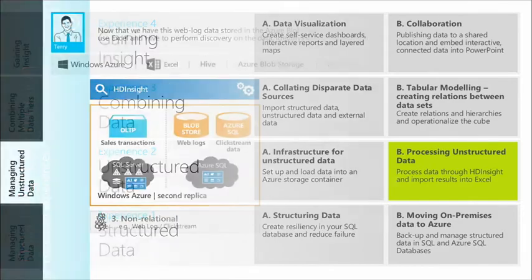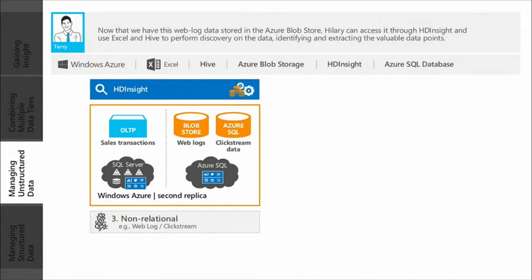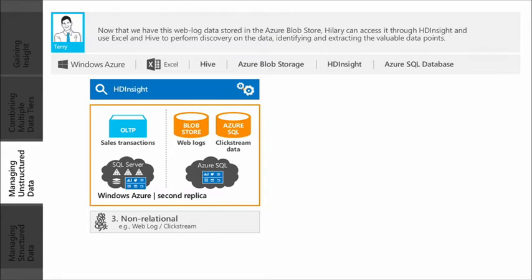Let's take a look at the scenario. We have web log data that we've put into Azure Storage — lots and lots of data, many gigabytes worth. Web log data is very unstructured and not human readable. The great use of HD Insight is to reduce this data down into useful information: targeted data we're interested in within that web log, like click streams, the types of users coming into our account, and where they're coming from.